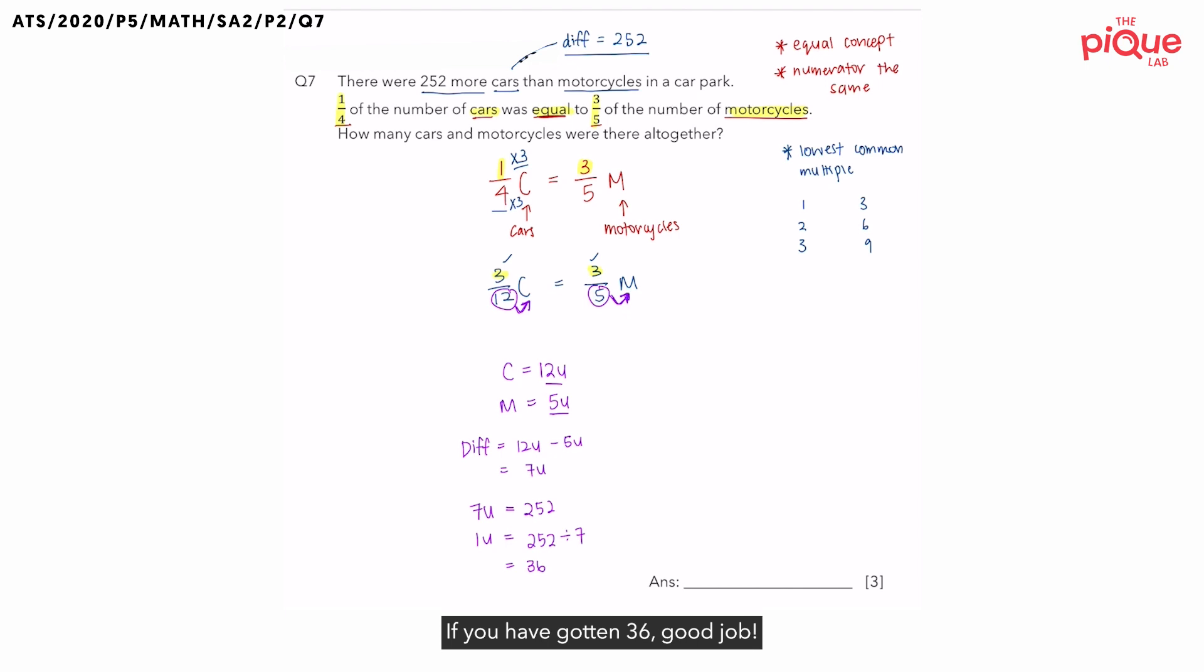If you have gotten 36, good job. Now, many of my students, when they reach 1 unit, they will be so happy that they just write, answer equals to 36. However, this is wrong. Why? Because, if you look at the question, you have actually not answered the question. Now, the question is asking, how many cars and motorcycles were there all together?